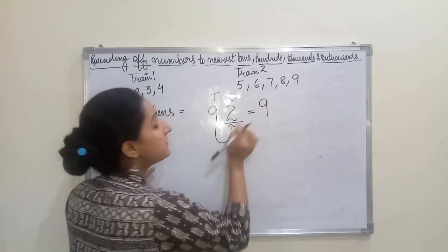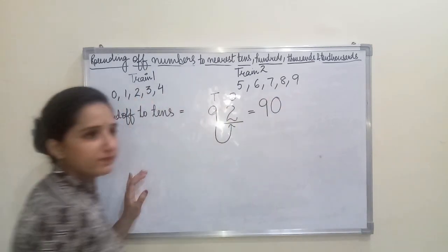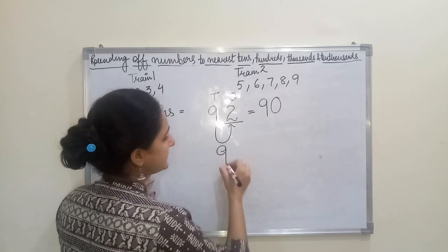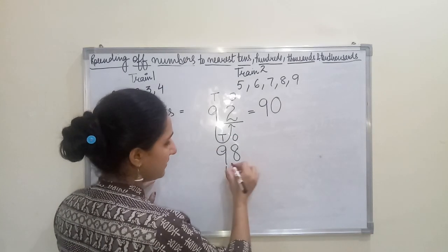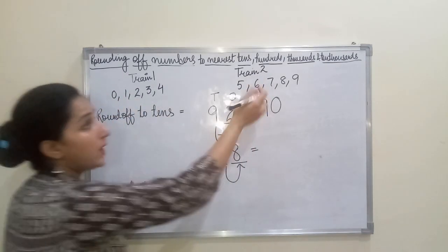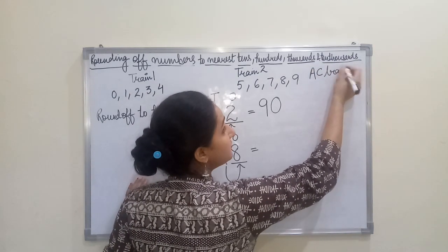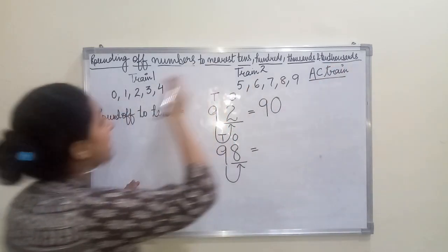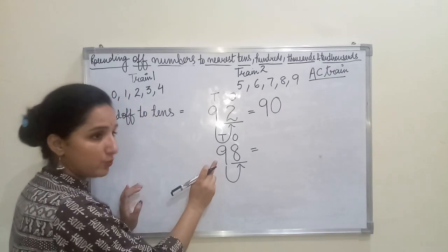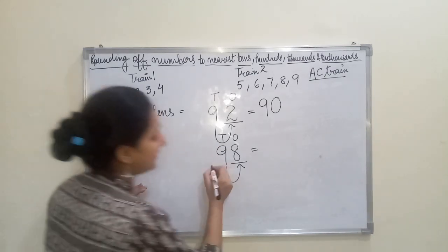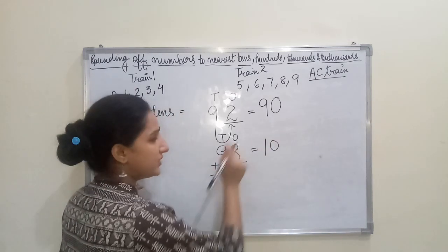So the nine remains nine, and the remaining digit two becomes zero — giving us 90. Let's take one more example: 98. Again, write down place values and mark the previous digit. Eight belongs to Train Two, which is the AC train. Since the AC train is higher, we add one to the actual position — nine becomes ten — and the remaining digit eight becomes zero, giving us 100.